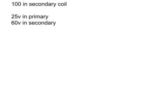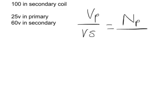So we need to bring in our formula. The voltage in the primary divided by the voltage in the secondary is equal to the number of coils in the primary divided by the number of coils in the secondary.